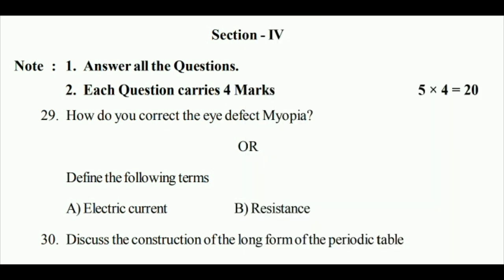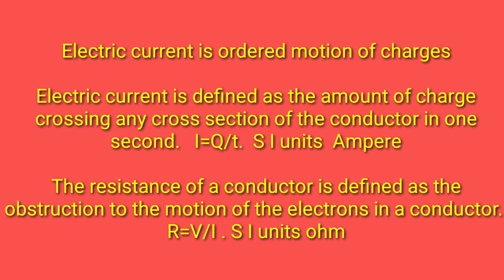Electric current and resistance definitions. Electric current is ordered motion of charges. Electric current is defined as the amount of charge crossing any cross-section of the conductor in one second: I = Q/t, SI units ampere. The resistance of a conductor is defined as the obstruction to the motion of the electrons in the conductor: R = V/I, SI units ohm.